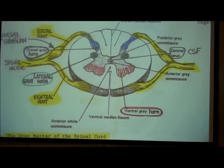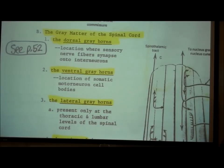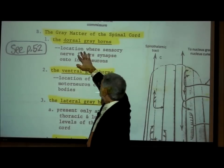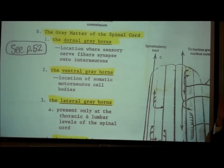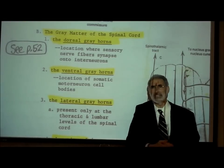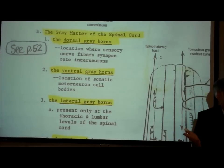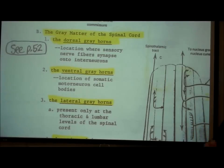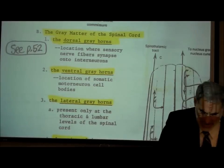The dorsal gray horns are the location where sensory nerve fibers synapse onto interneurons. We may all be thinking, what does that mean? So let's go back to page 52 to clarify.